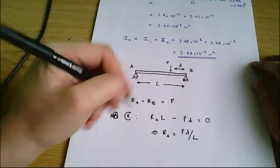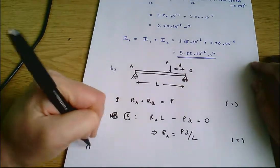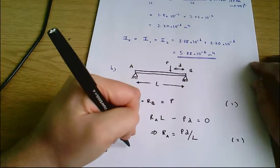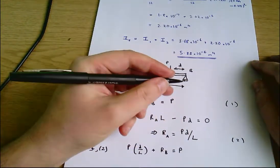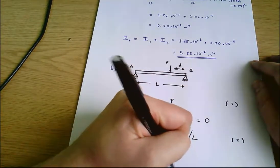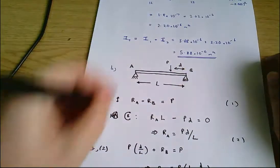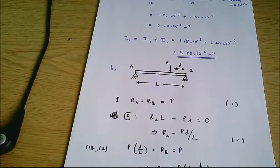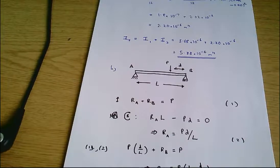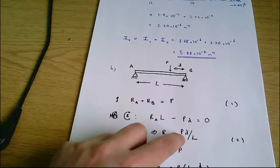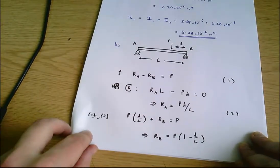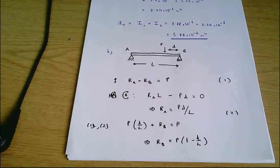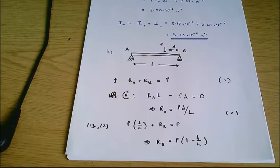Combining the equilibrium equations: Pd/L + Rb = P, therefore Rb = P(1 − d/L). Checking: Pd/L + P − Pd/L = P. That works. So we've calculated Ra and Rb in terms of P, d, and L.